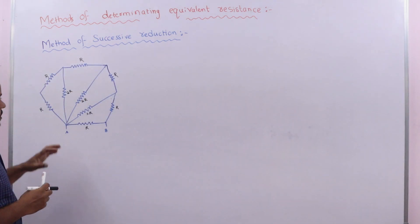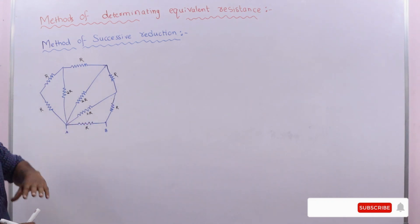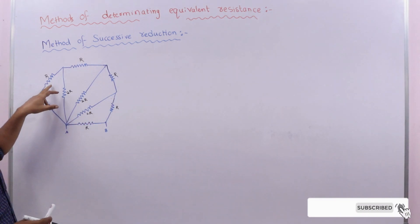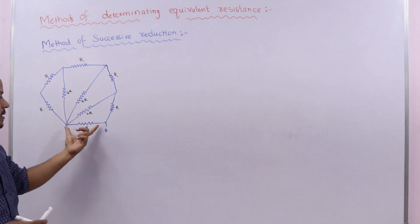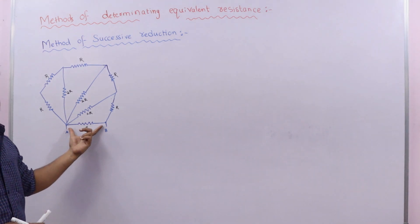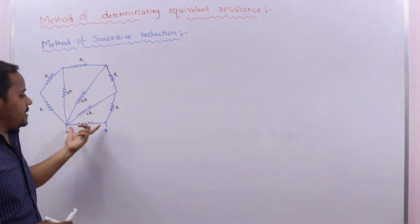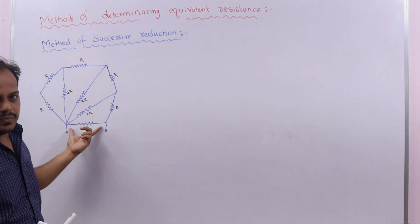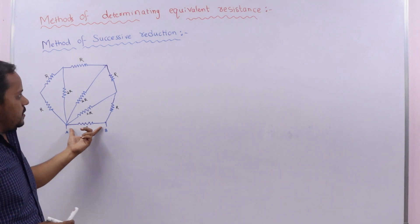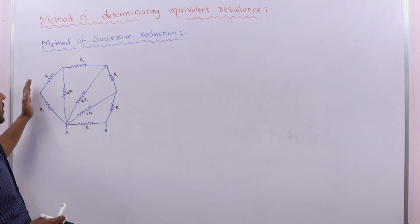In this circuit we have many resistors of different resistance like R and 2R, connected between points A and B. Our intention is to find the equivalent resistance between A and B. We are going to start solving this circuit from one end.